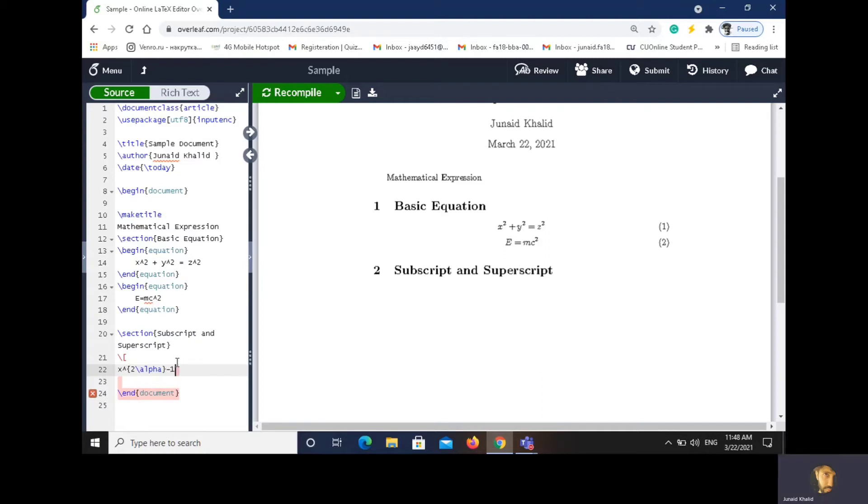Minus 1 equals to y_ij plus y underscore ij. Underscore represents subscript and this is close. And compile, ctrl enter. It will appear here. So this is 2 alpha is a superscript and y_ij, ij is subscript.